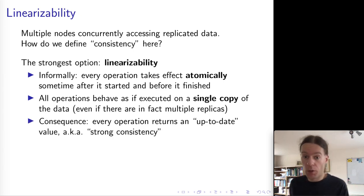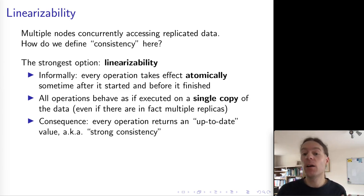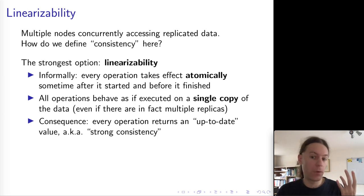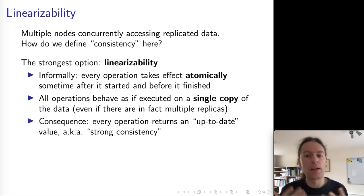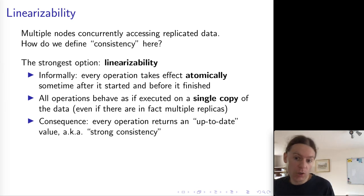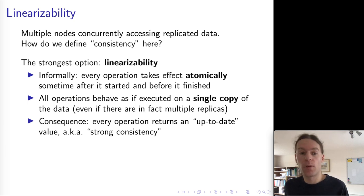A consequence of this definition of linearizability is that whenever you read some data, you're guaranteed to get an up-to-date value — for some definition of up-to-date that we will see in a moment. This is sometimes also called strong consistency, but that term is a bit poorly defined and vague. So we're going to stick with linearizability, which is formally defined, though I'll just give you the intuition through some examples.